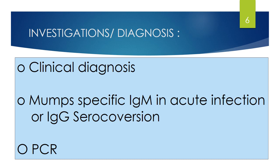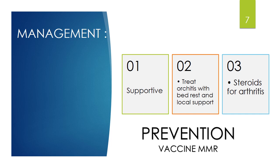Management of mumps begins with supportive treatment, including analgesics, antipyretics if the patient has fever, and plenty of fluids. Orchitis is treated with bed rest and local support. Steroids can be given for arthritis. The vaccination to prevent mumps infection is the MMR (measles-mumps-rubella) vaccine, which provides protection for up to 10 years, and a booster can be given between four to six years of age.